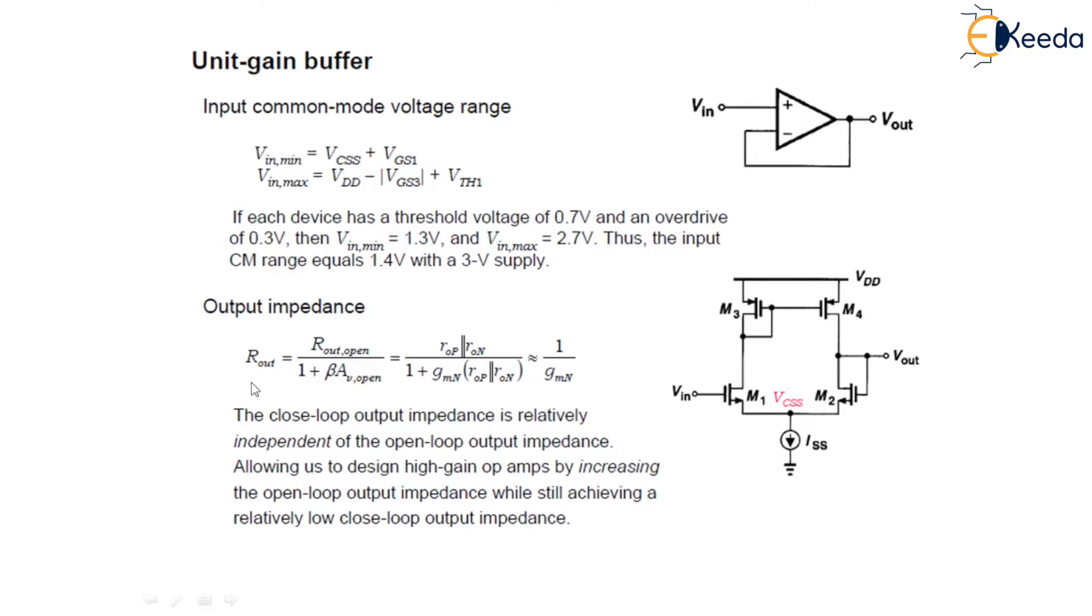Next, the output impedance. The output impedance is given as Rout open upon 1 plus βAV open, which is further given as ROP in parallel with RON upon 1 plus GMN ROP in parallel with RON. This is equivalent to 1 upon GMN. Thus we can notice here the closed loop output impedance is relatively independent of the open loop output impedance, which allows us to design high gain op-amps by increasing the open loop output impedance.